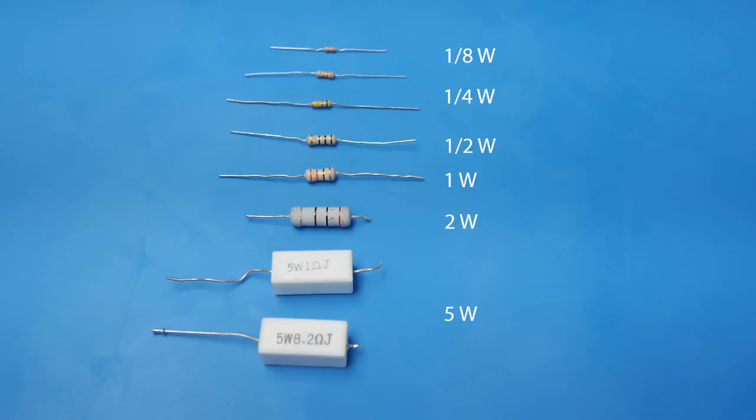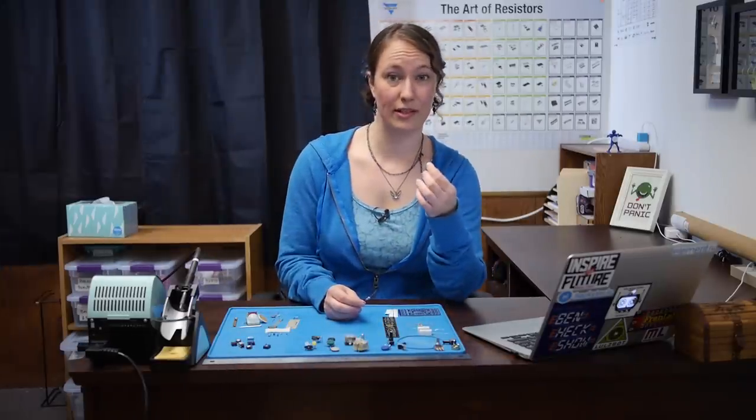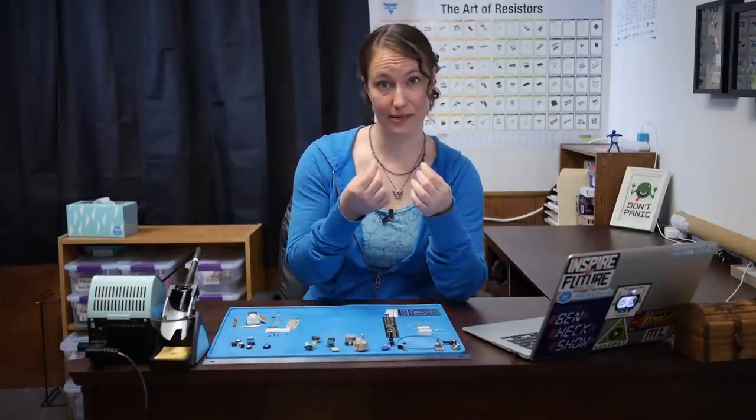Carbon resistors, for example, are commonly made in wattage ratings of one-eighth watt, one-quarter watt, one-half watt, one watt, and two watts. Generally speaking, the larger the physical size of the resistor, the higher its wattage rating. A one-eighth watt resistor is much smaller than a two-watt resistor.